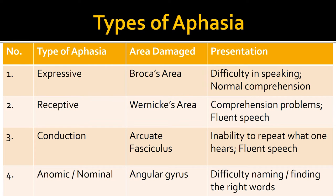In expressive aphasia, there is normal comprehension but difficulty in speaking. In receptive aphasia, there is fluent speech but comprehension problems. In conduction aphasia, the person is not able to repeat what he or she hears, but speech is fluent. In anomic or nominal aphasia, the subject has difficulty naming or finding the right words.